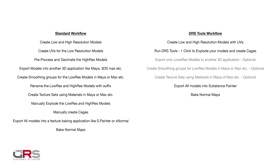There are many variations of the standard workflow, however the basic idea is that we create low-res and high-res models, we then create UVs, and take all our high-res models and run them through the very time-consuming baking process. Then, after exporting all our models into another 3D application like Maya or Max, we create the smoothing groups for the low-res models, and rename the low-res and high-res models with the corresponding suffix. We then create texture sets that will be used in Substance Painter, and manually explode the models and create cages for them. Finally, we export all the models into a texture baking application like Substance Painter or X-Normal to make our normal maps. However, in this course we are mainly going to focus on baking normal maps inside Substance Painter.